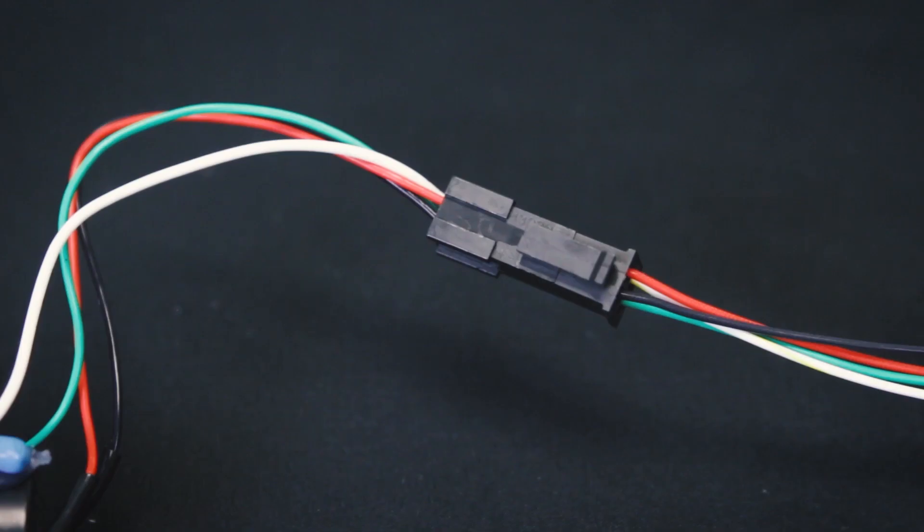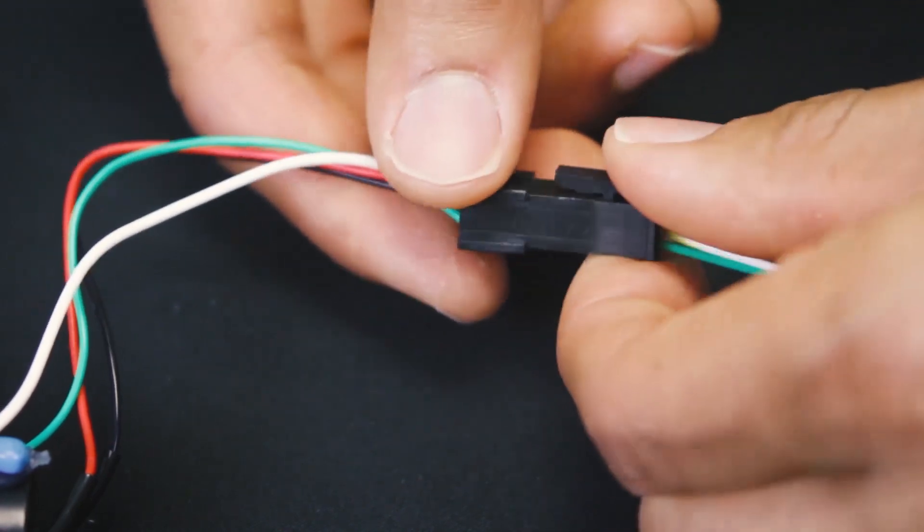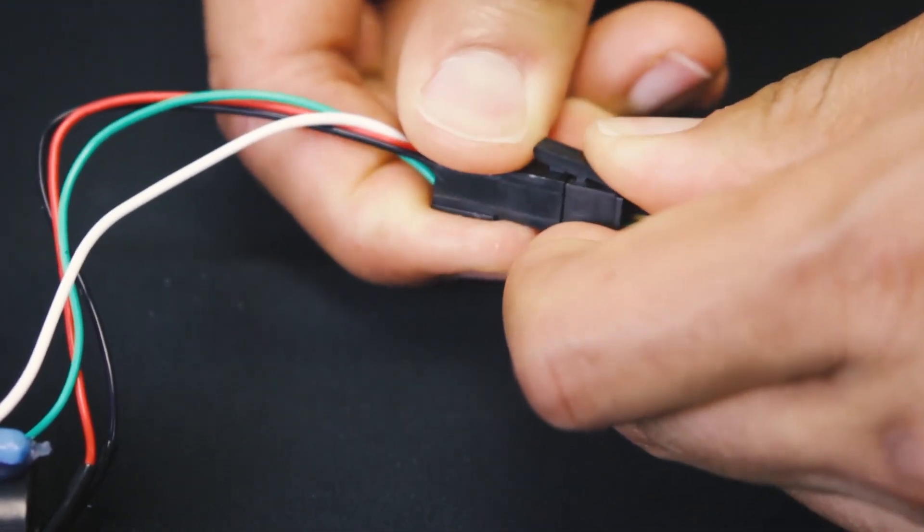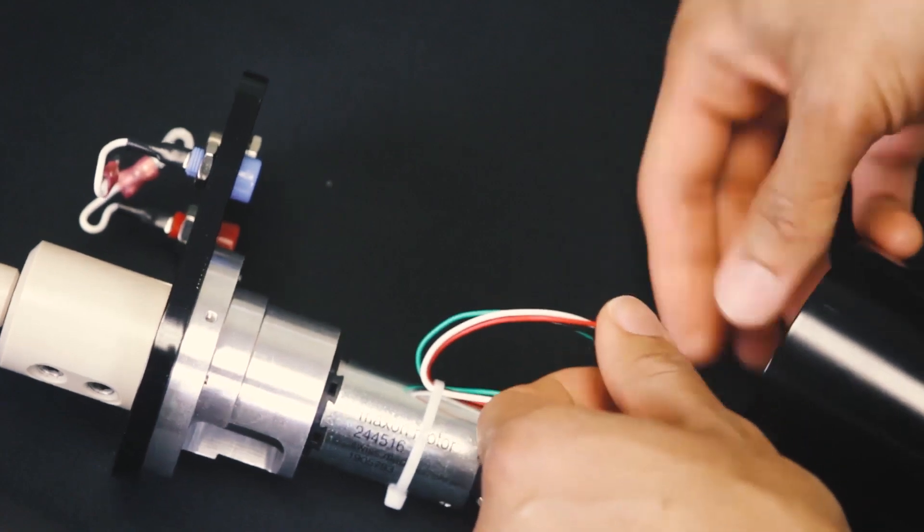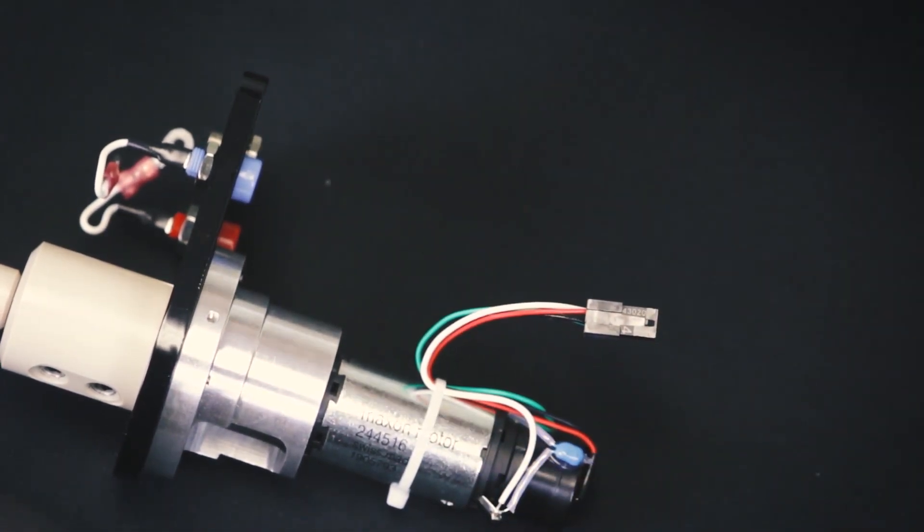Unclip the motor wire assembly by pressing this lever and pull the motor housing from the motor head. Place the motor housing off to the side.